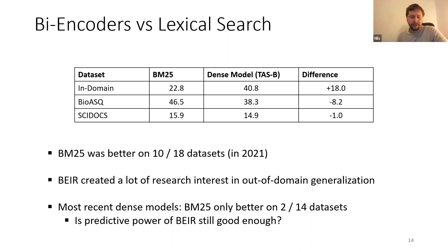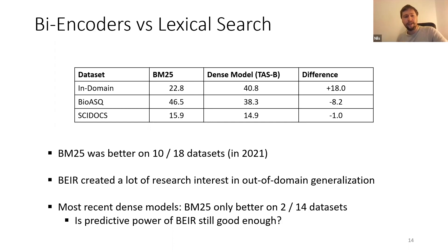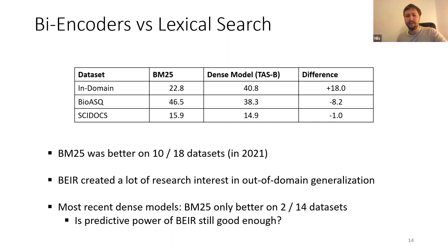But we have to ask again: how good is the predictive power of BEIR? Do people already overfit on the BEIR benchmark? And is it time to move to a BEIR version two, and find more and better and more challenging retrieval datasets?